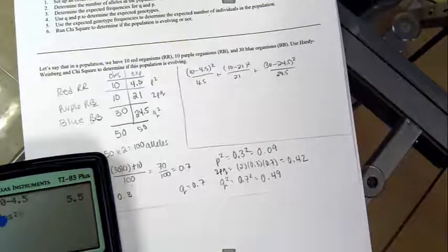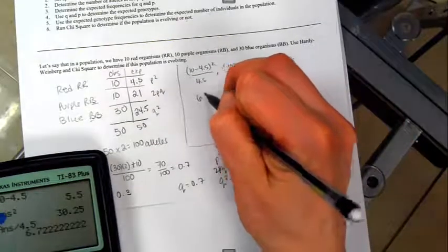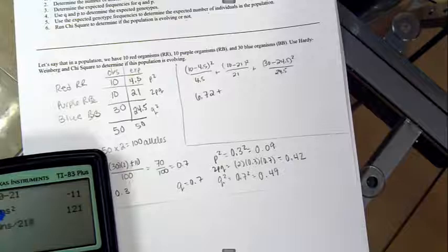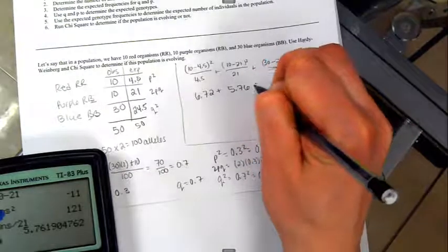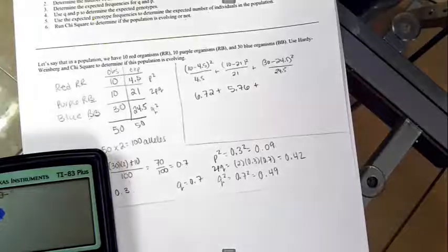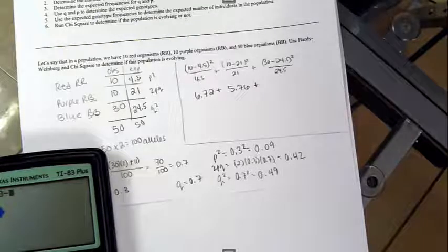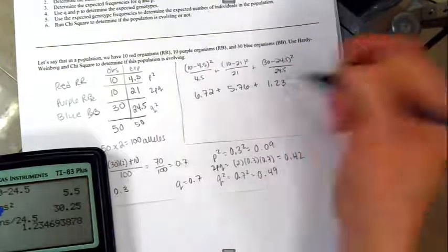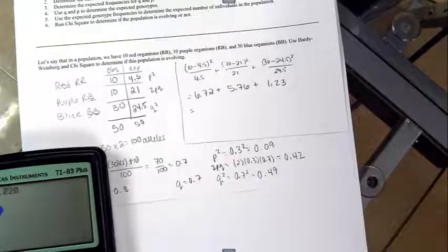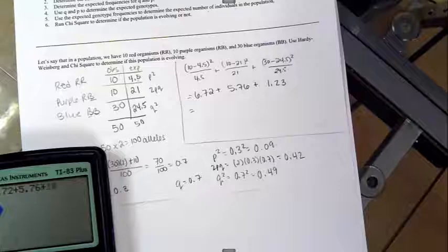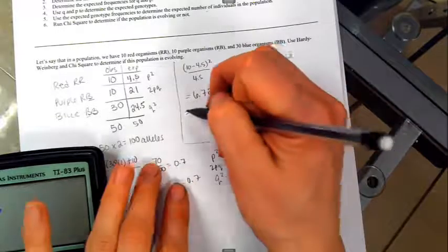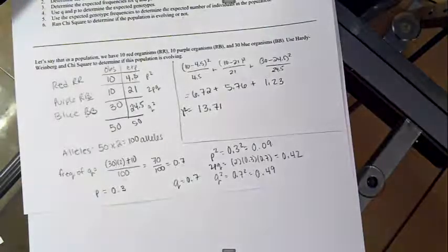I'm going to go ahead and calculate those. You do the same. So I get 13.71 as my chi-square value. If you rounded differently internally, your number might be different, but it should at least be close.